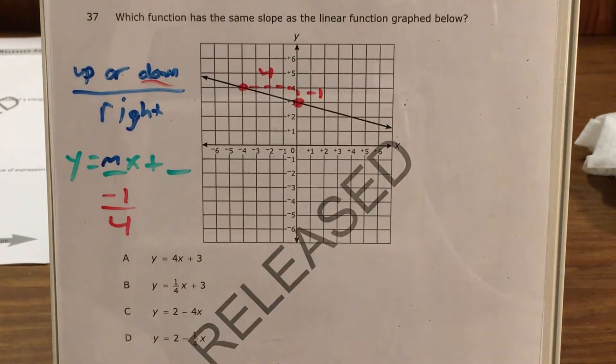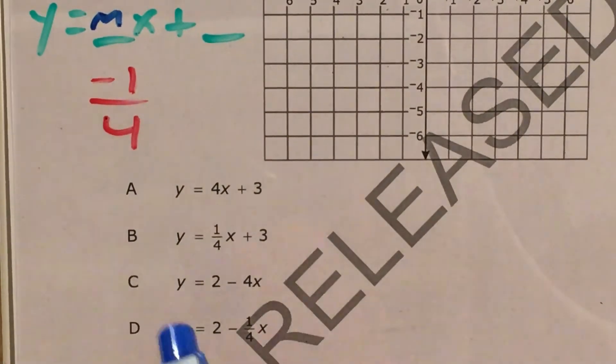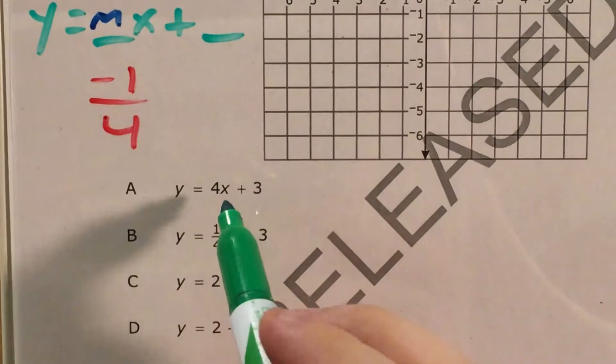Finding the slope was half the problem. Now I have to look at my answer choices and see which one actually matches that slope. So let me zoom in on this. Now I'm just seeing which of my functions has a slope of negative one fourth.